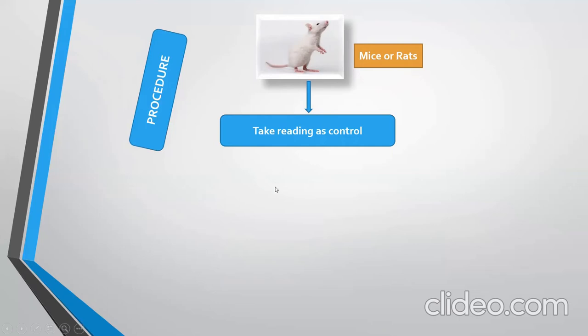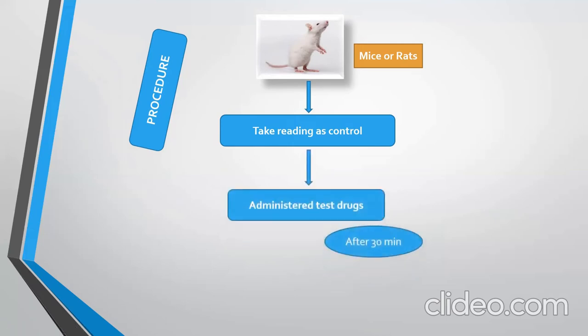Allow the animal to move around. Typically, the rodents will move around the periphery of the compartment until they find the door. Once they find the door, they will move from the light compartment to the dark compartment and back to the light compartment, and this process will take 7 to 12 seconds. Take the reading of the control animal, then administer the test drug by the suggested route and dose to the animal.